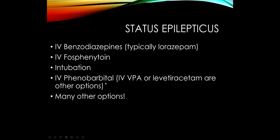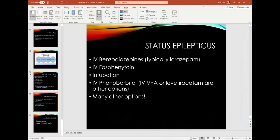There are many other options after that, but neurologists often don't agree on where to go from there. What's most important: in status epilepticus, an emergency room doctor needs to aggressively give benzodiazepines at the right dose. If that doesn't work, use fosphenytoin, then intubate the patient. After that, neurology will be involved in recommending the anticonvulsants to use. Remember that status epilepticus is a neurologic emergency because prolonged seizures can cause neuronal death.